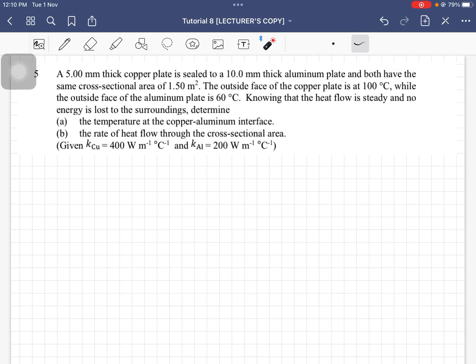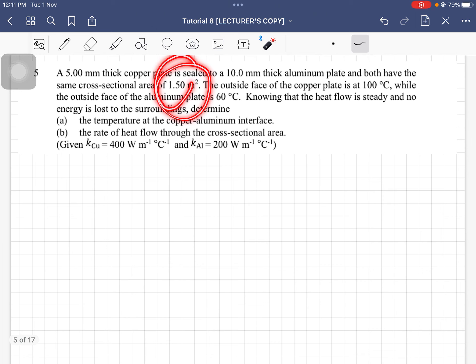Question number 5. A 5 mm thick copper plate is sealed to a 10 mm thick aluminum plate and both have the same cross-sectional area of 1.5 meter square. The outside face of the copper plate is at 100 degrees Celsius, while the outside face of the aluminum plate is 60 degrees Celsius. Knowing that the heat flow is steady and no energy is lost to the surroundings, determine the temperature at the copper-aluminium interface and the rate of heat flow through the cross-sectional area.